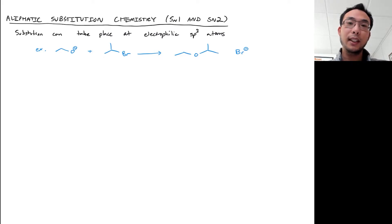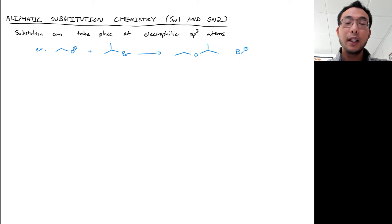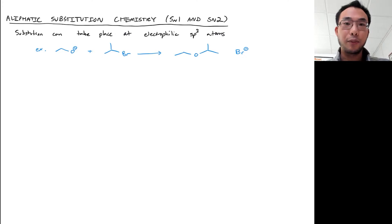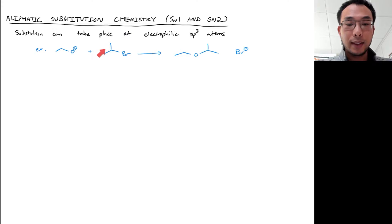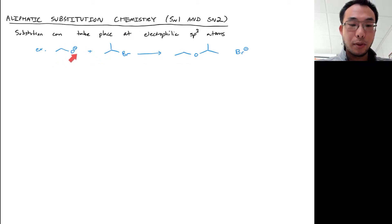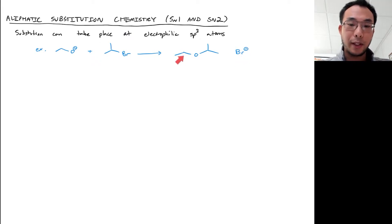Substitution can take place if there's an sp3 carbon, or really any other atom that's sp3, that has a leaving group attached to it, which makes that carbon or other atom electrophilic. Here, a nucleophile can react with this carbon where the electrophile — the sigma star orbital from carbon to bromine — is the electrophilic molecular orbital, doing a substitution where this group has substituted the place of the bromine, kicking out the bromide leaving group and forming a new product.